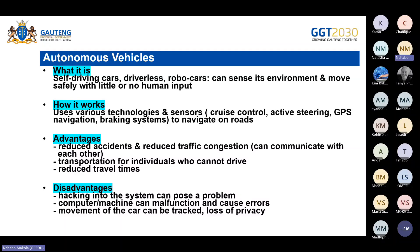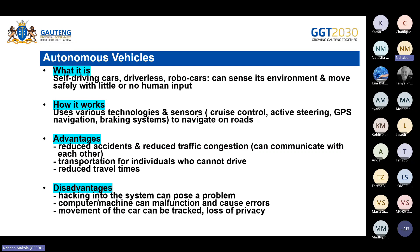Autonomous vehicles use various technologies and sensors to navigate on roads. Advantages include reduced accidents, reduced traffic congestion, transportation for individuals who cannot drive, and reduced travel times. Disadvantages: hacking into the system can pose a problem, the computer or machine can malfunction causing errors on the road, and the movement of the car can be tracked resulting in loss of privacy.